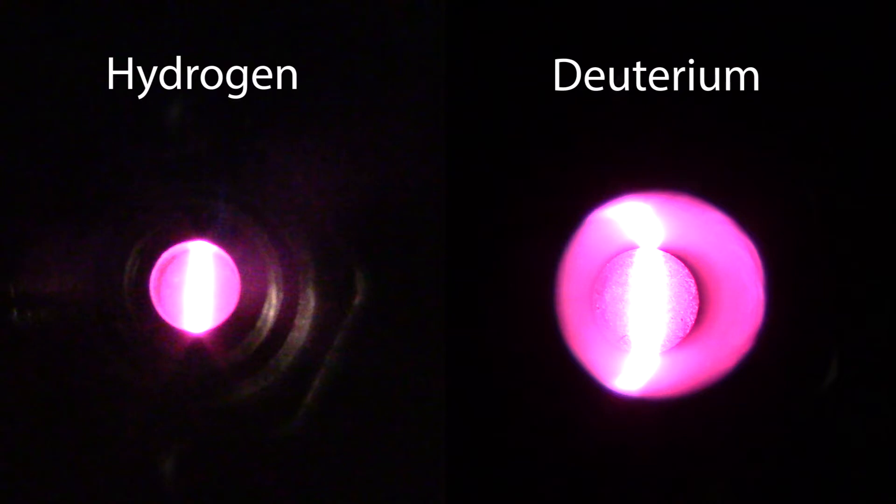To the naked eye, there is very little difference between the emission spectra of hydrogen and deuterium. However, when dispersed through a grating and measured using a spectrometer, minute differences in the wavelengths of the specific emission lines can be detected.